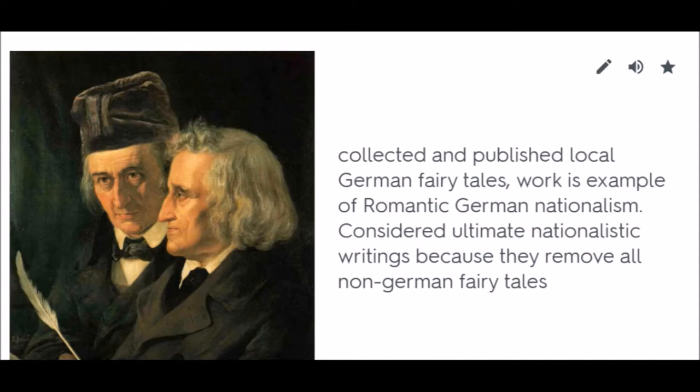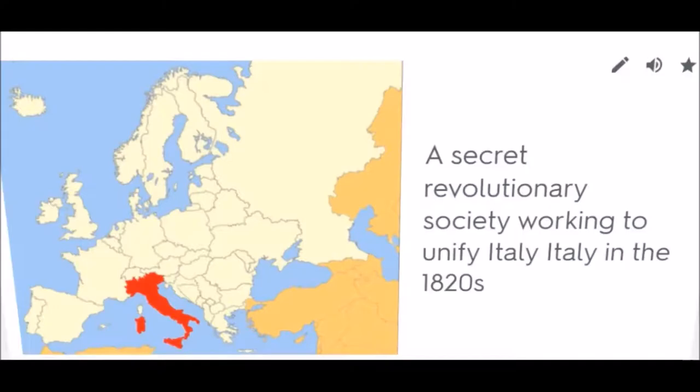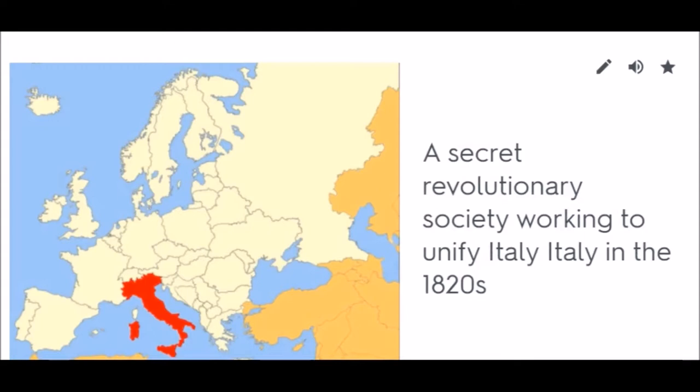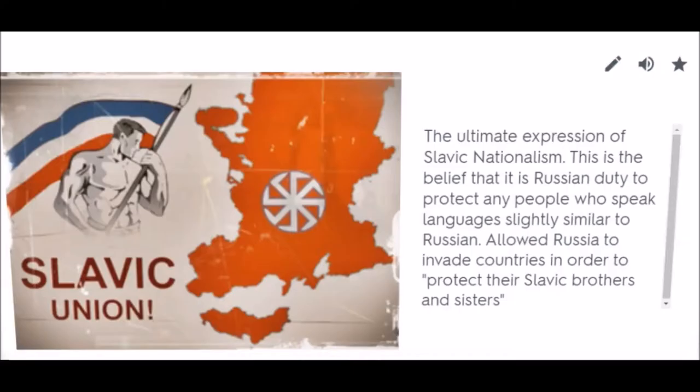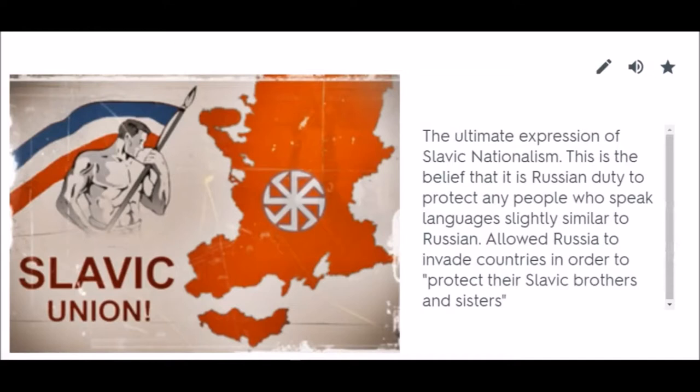Carbonari: A secret revolutionary society working to unify Italy in the 1820s. Pan-Slavism: The ultimate expression of Slavic nationalism — the belief that it is Russia's duty to protect any people who speak languages slightly similar to Russian. This allowed Russia to invade countries in order to protect their Slavic brothers and sisters.